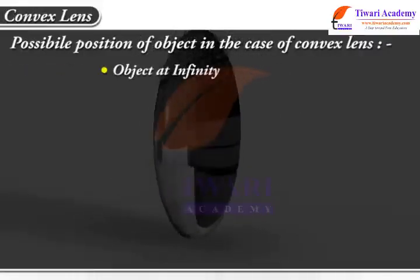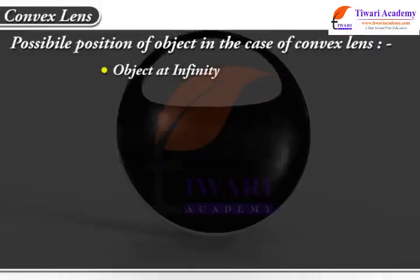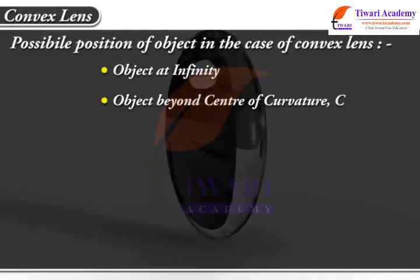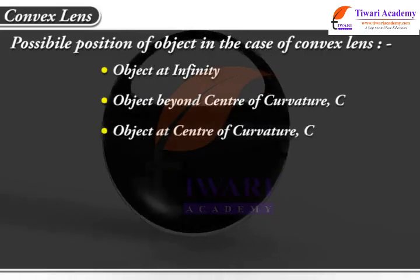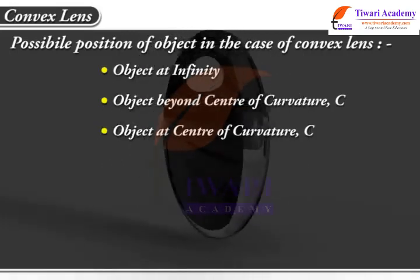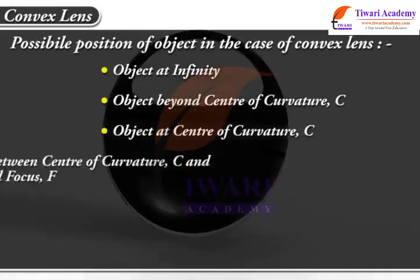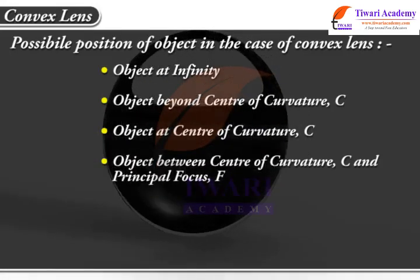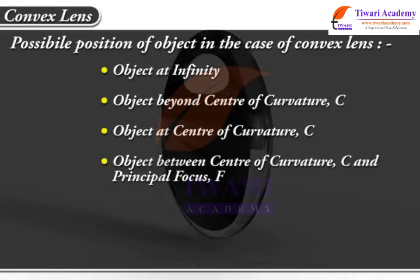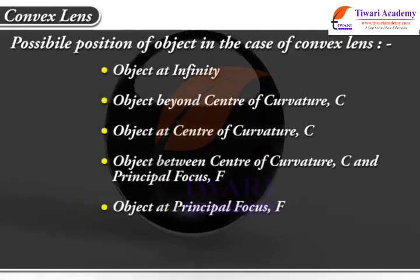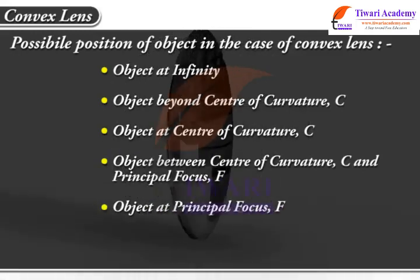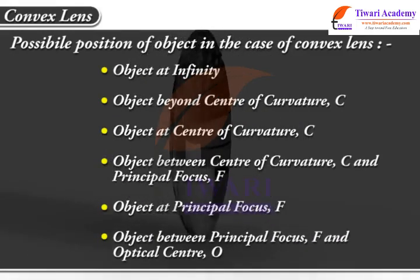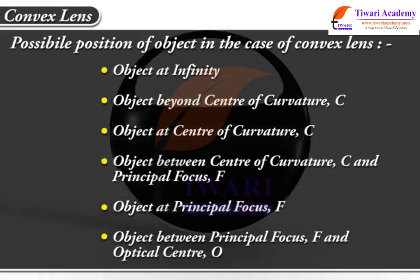The six positions are: object at infinity, object beyond centre of curvature C, object at centre of curvature C, object between centre of curvature C and principal focus F, object at principal focus F, and object between principal focus F and optical centre O.